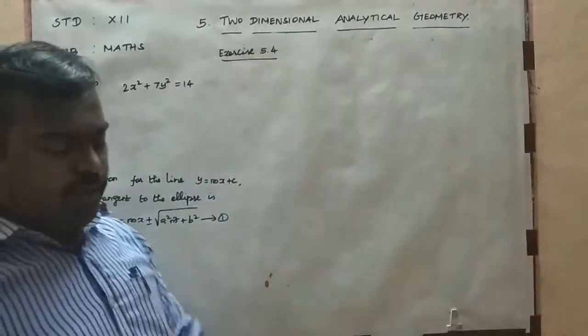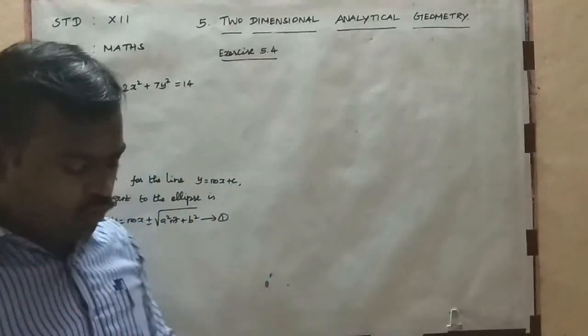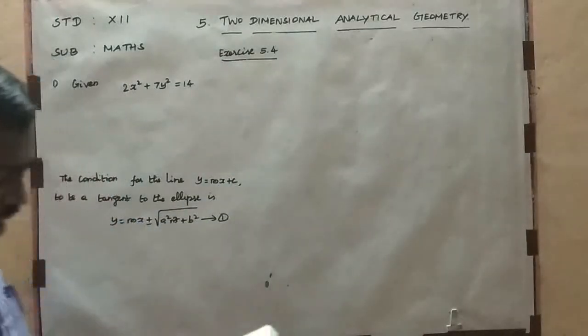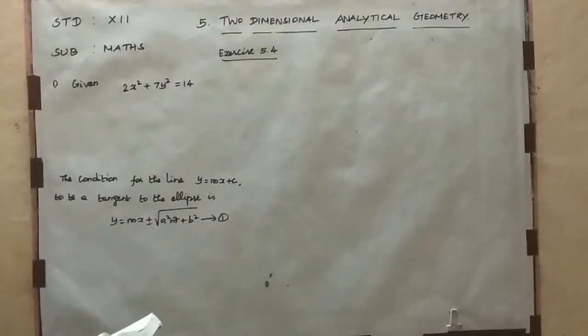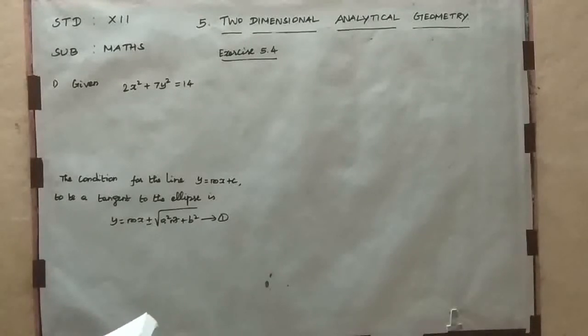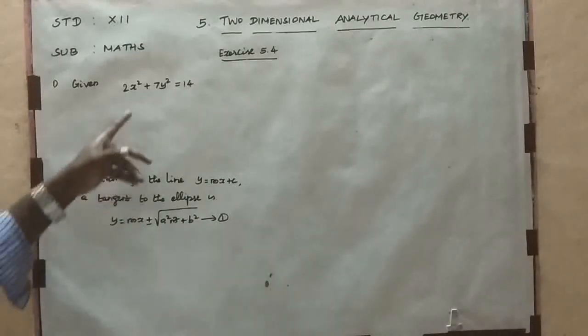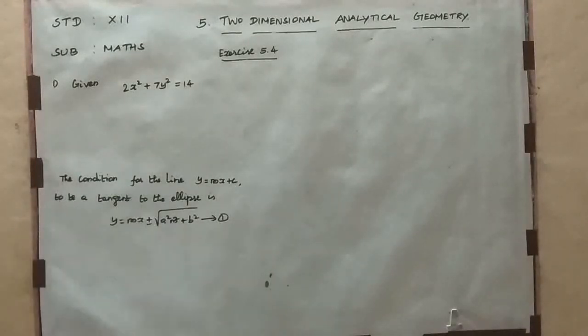Friends, now exercise 5.4, question number 1: find the equation of the two tangents that can be drawn from (5, 2) to the ellipse 2x² + 7y² = 14.